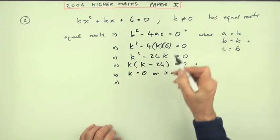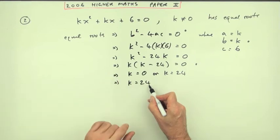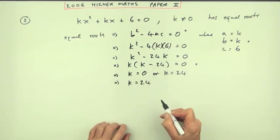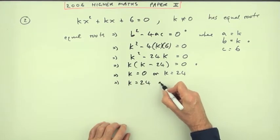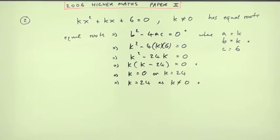It said k isn't zero, so for your final mark you have to identify 24 as the answer but give a reason. It has to be justified and the reason is as k is not equal to zero. That's your fourth mark.